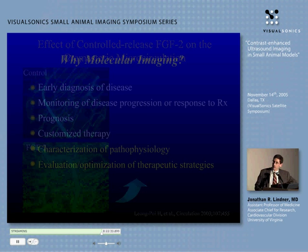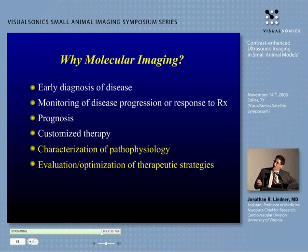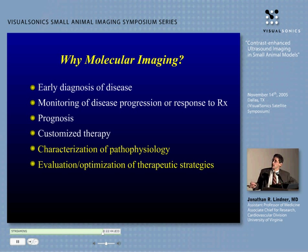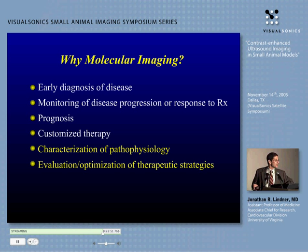Why are we doing this? Why molecular imaging? From a clinical perspective we're interested in very early diagnosis of disease — for example, very early diagnosis of tumors or metastasis — and monitoring disease progression or response to therapy. I'm very active in working with GI colleagues at UVA in detecting and following the response to therapy in Crohn's models and inflammatory bowel disease models using MAD-CAM targeted agents.